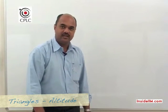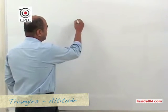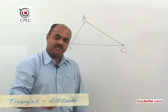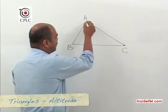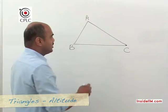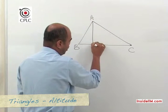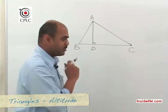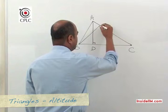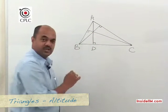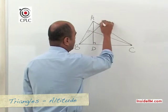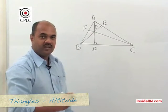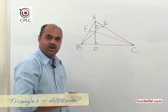Let's now look at what is known as an altitude. Considering triangle ABC, the altitude — also called the height — is a line drawn from a vertex perpendicular to the opposite side. So if we draw a perpendicular from A onto BC, then AD is called the altitude. If we draw all three altitudes, they meet at one common point known as the orthocenter.